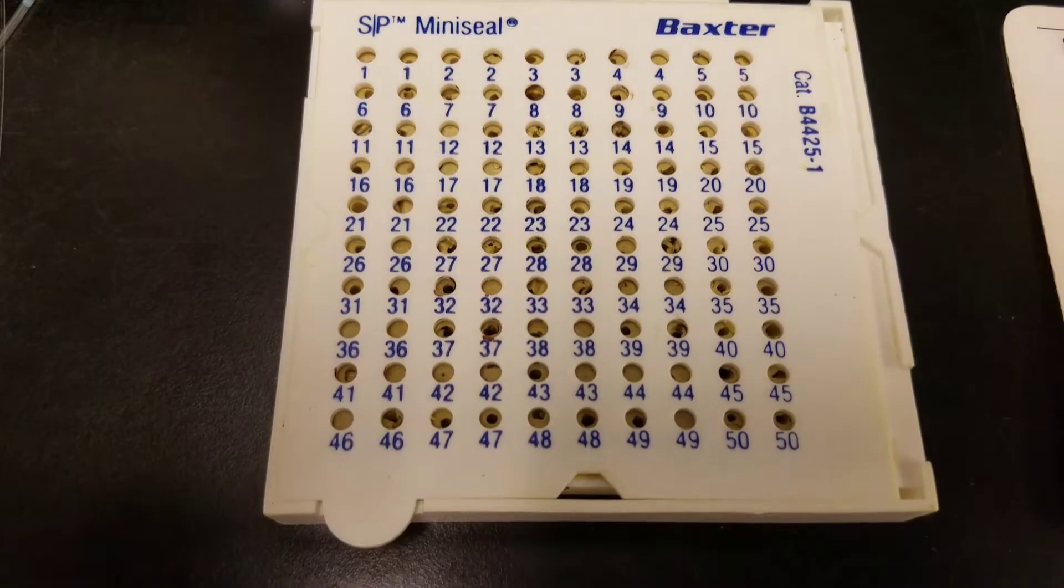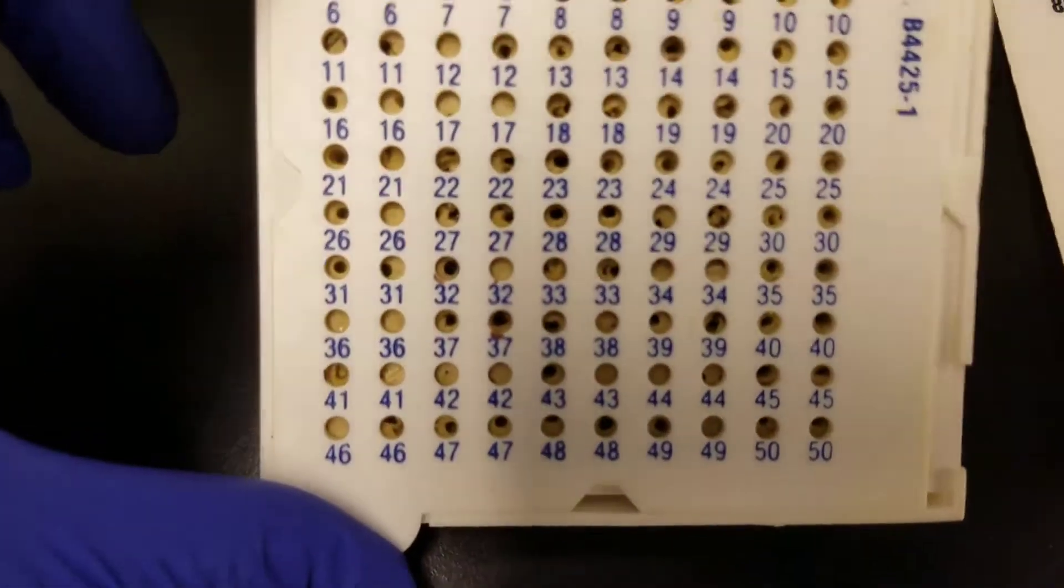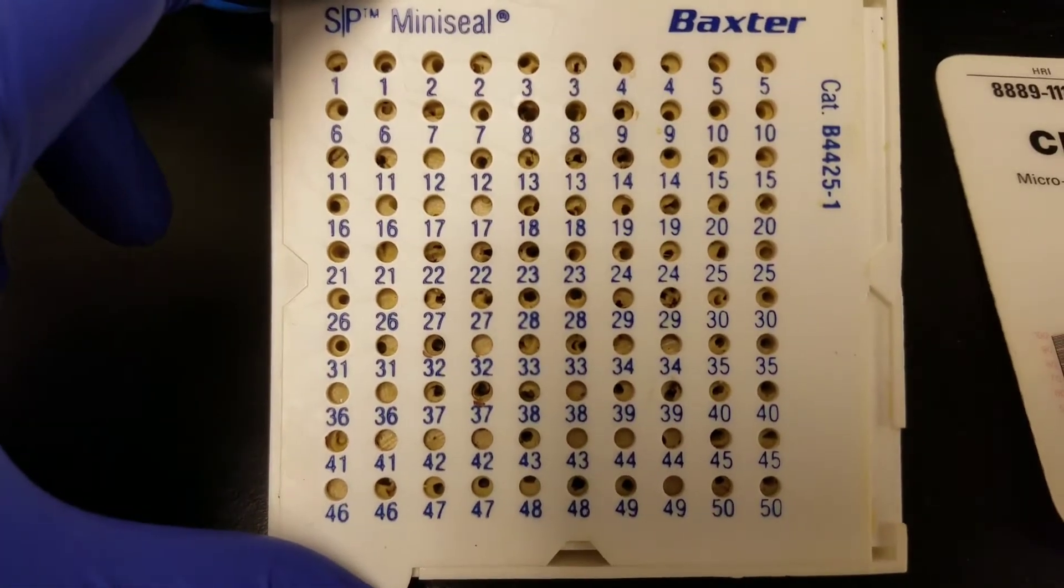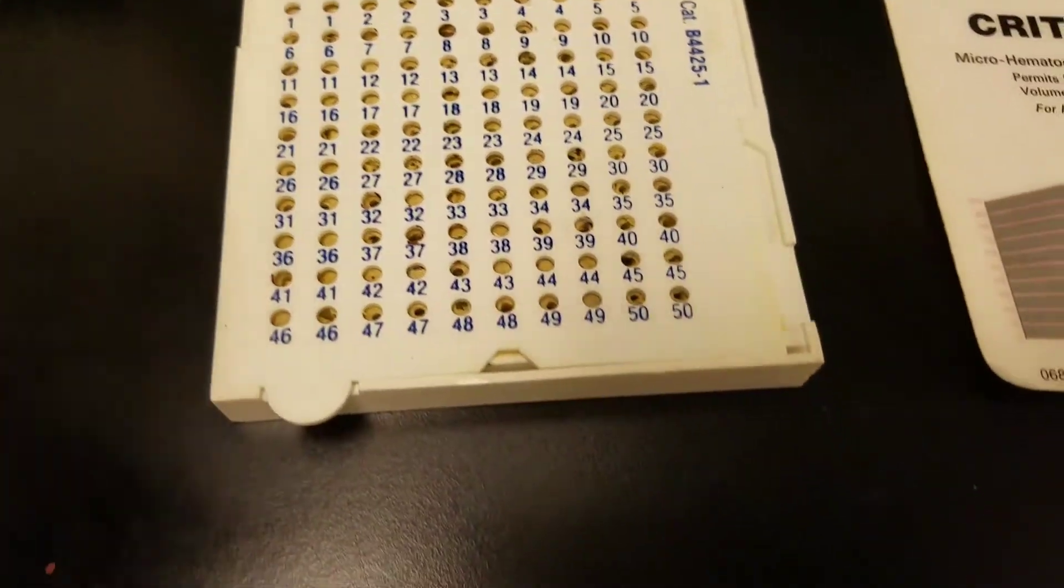Besides the tubing, you will also need something to seal it with. This little tray is called a Baxter Mini Seal. Kind of old looking. But you can see all the holes that have already been used up with the clay-like substance.